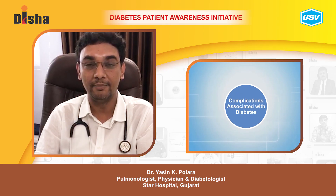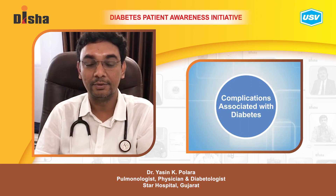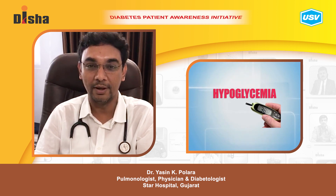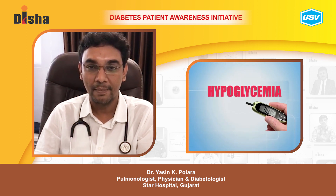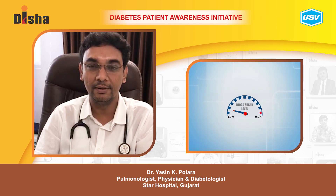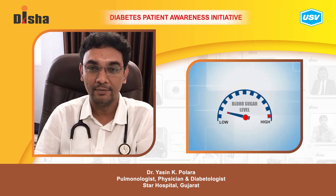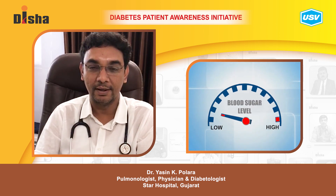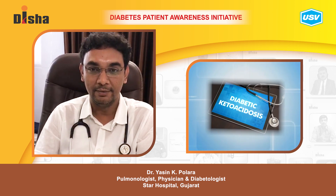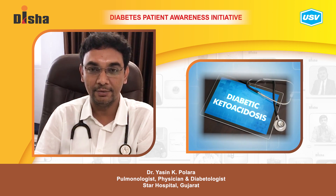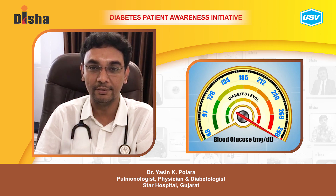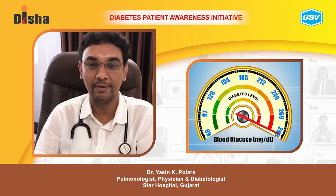Complications of diabetes: The most common complication is hypoglycemia, which is a condition where sugar levels decrease in the blood. The second is diabetic ketoacidosis, in which the sugar level is on the higher side and ketoacidosis develops in the blood.